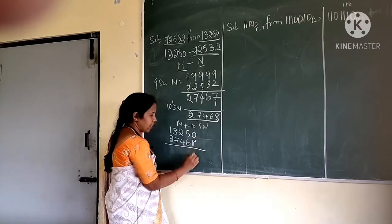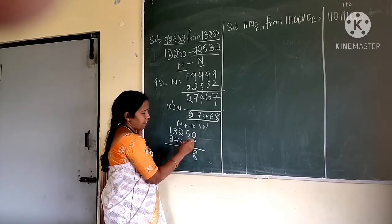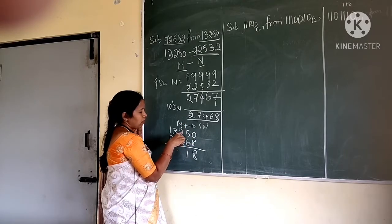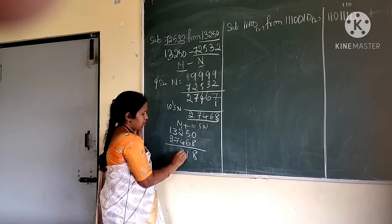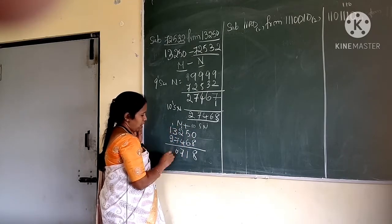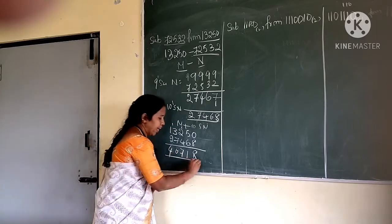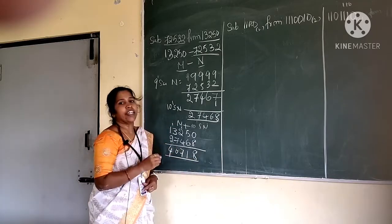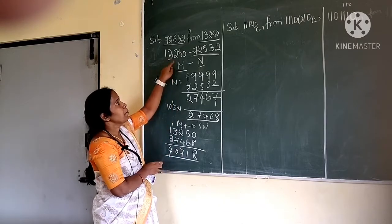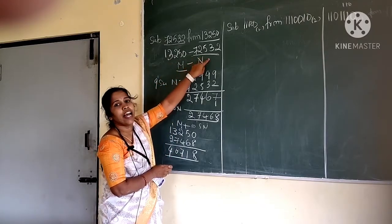What are you getting here? 0 plus 8 is 8, 5 plus 6 is 11, write 1 carry 1, 2 plus 4 plus 1 carry is 7, 3 plus 7 is 10, write 0 carry 1, 1 plus 2 plus 1 is 4. So here you are not getting an end carry. End carry is not generated because m is less than n.